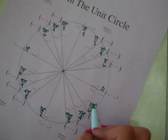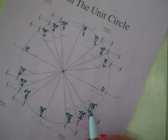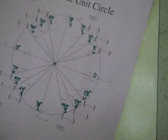5 plus 6 is 11. So it would be 11π over 6. And that's an easy way to remember the radians.